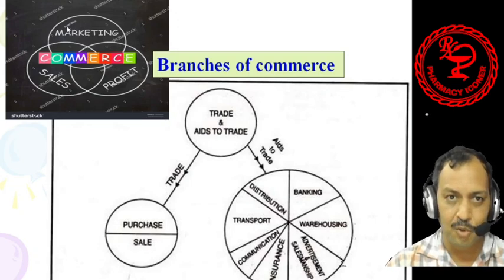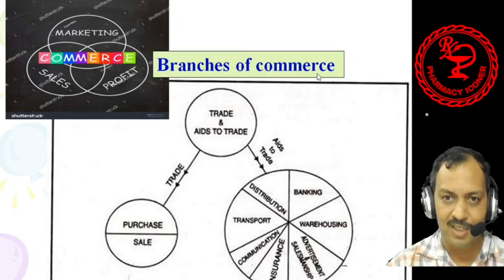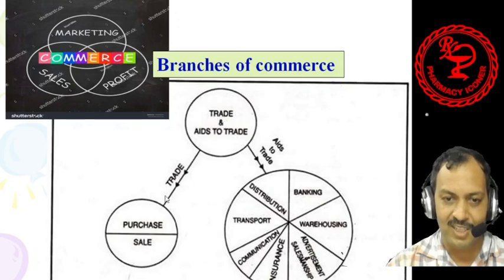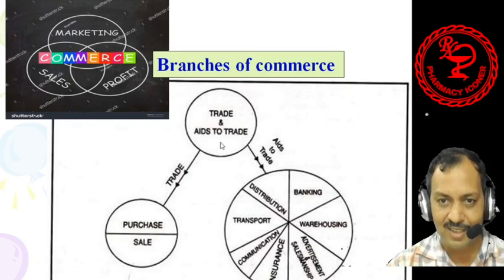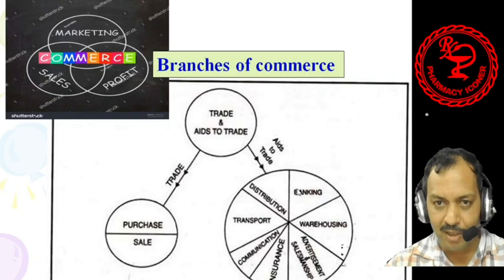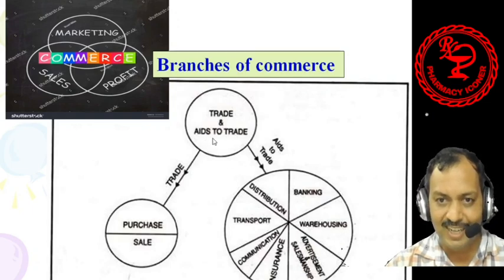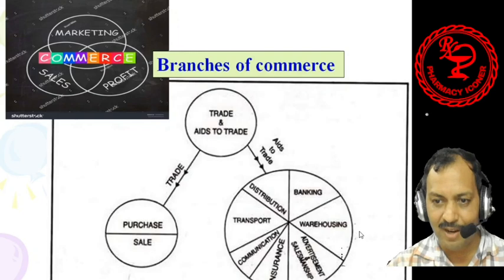These three issues are interconnected to perform Commerce. Various branches of Commerce include Trade and Aids to Trade. Trade is the combination of purchase and sale. Aids to Trade are not actually trading activities, but they are associated with trading activities. Important Aids to Trade are Banking, Warehousing, Advertisement and Salesmanship, Insurance, Communication, Transport, and Distribution.